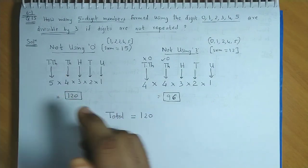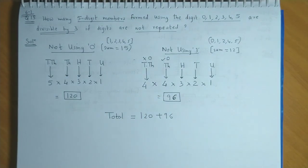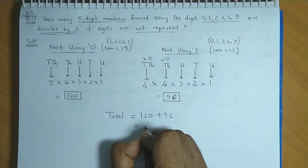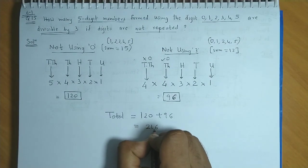Overall, the total numbers which are divisible by 3 would be 120 from the first case and 96 from the second case. So the overall total is 216.